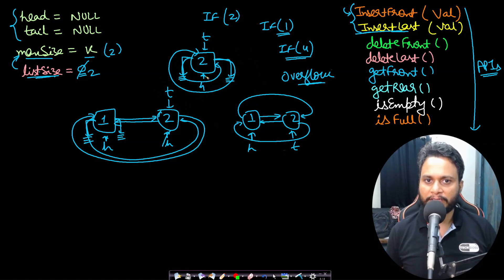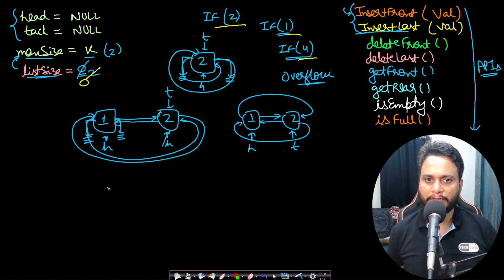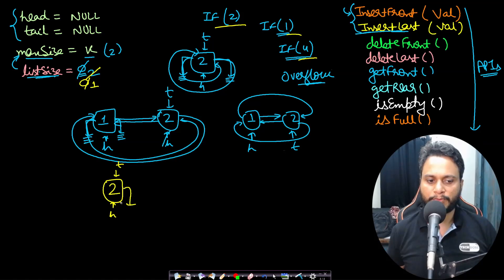For insert last, let's do a dry run with values 2, 1, and 4. List size starts at 0. When new node 2 is made — being the only node — head and tail both point to 2 and list size becomes 1. The next and previous pointers are null initially, but to make it a circular deque, the next pointer points to node 2 itself and the previous pointer also points to the same node.